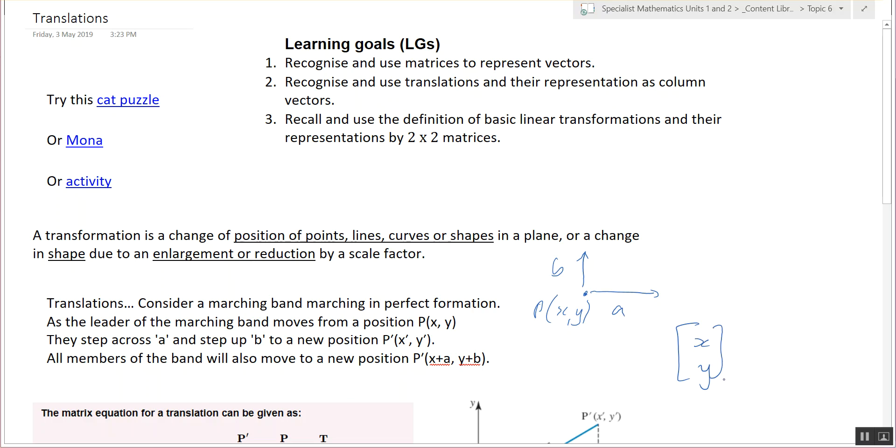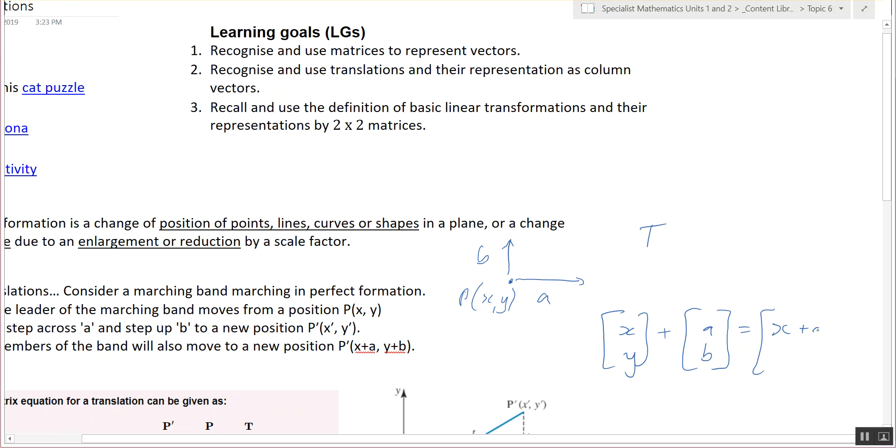Does that make sense? And then you add what we call the translation matrix, so it's often given as a T, and we have the new point which will be X plus a, Y plus b. So this is P, this is T, and this is the new P point. Does that make sense? So we've slid that point or we've translated that point to a new place.